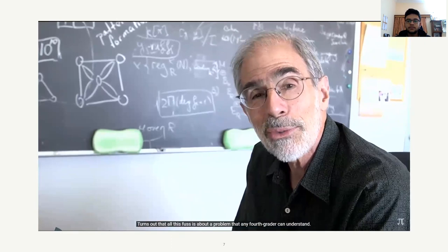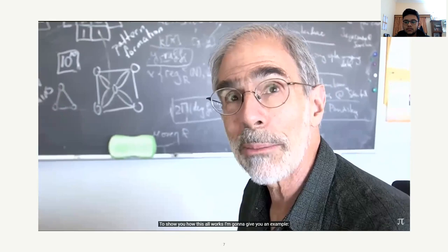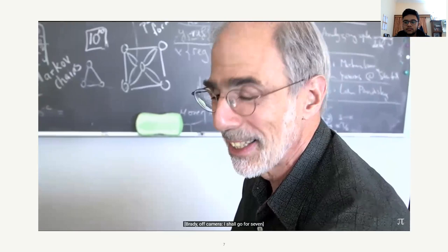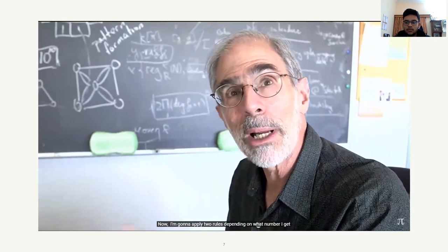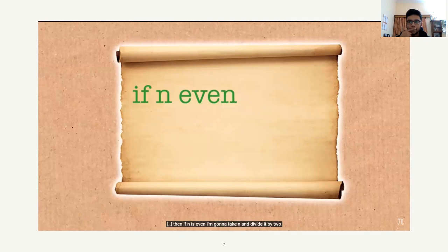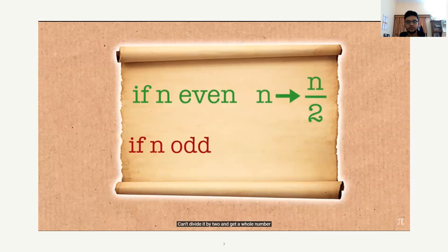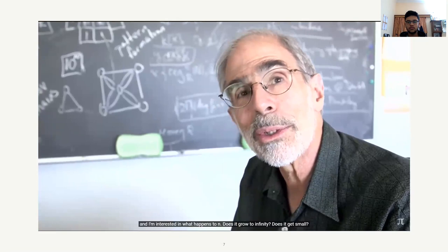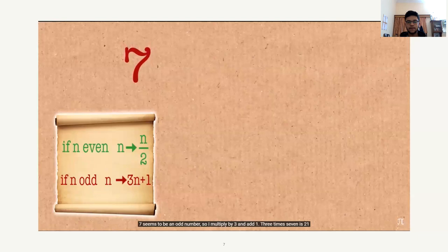To show how this works, let's take an example. Starting with 7 — applying two rules in succession: if n is even, divide it by 2; if n is odd, multiply it by 3 and add 1. The question is: does n grow to infinity, or does it get small? 7 is odd, so we multiply by 3 and add 1: 3 times 7 is 21, plus 1 is 22.